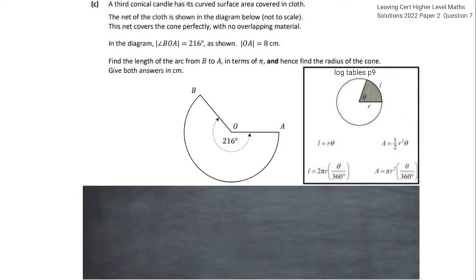So let's start off. The length of AB is equal to 2 pi by r. In this case we're given 8 and the angle is 216 over 360. So the length of the arc in terms of pi will be 9.6 pi. And that's the first part completed.